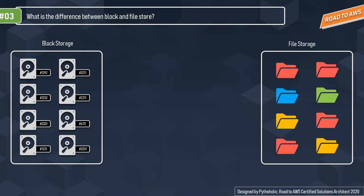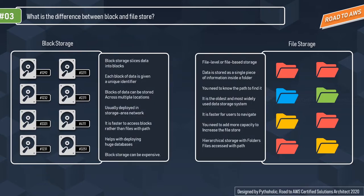Block storage slices data into blocks, as we discussed. File storage uses file-level or file-based storage — you store files into folders or segments. Each block of data on the block storage side is given a unique identifier — that address is the only metadata you get. On the file storage side, data is stored as a single piece of information inside a folder.